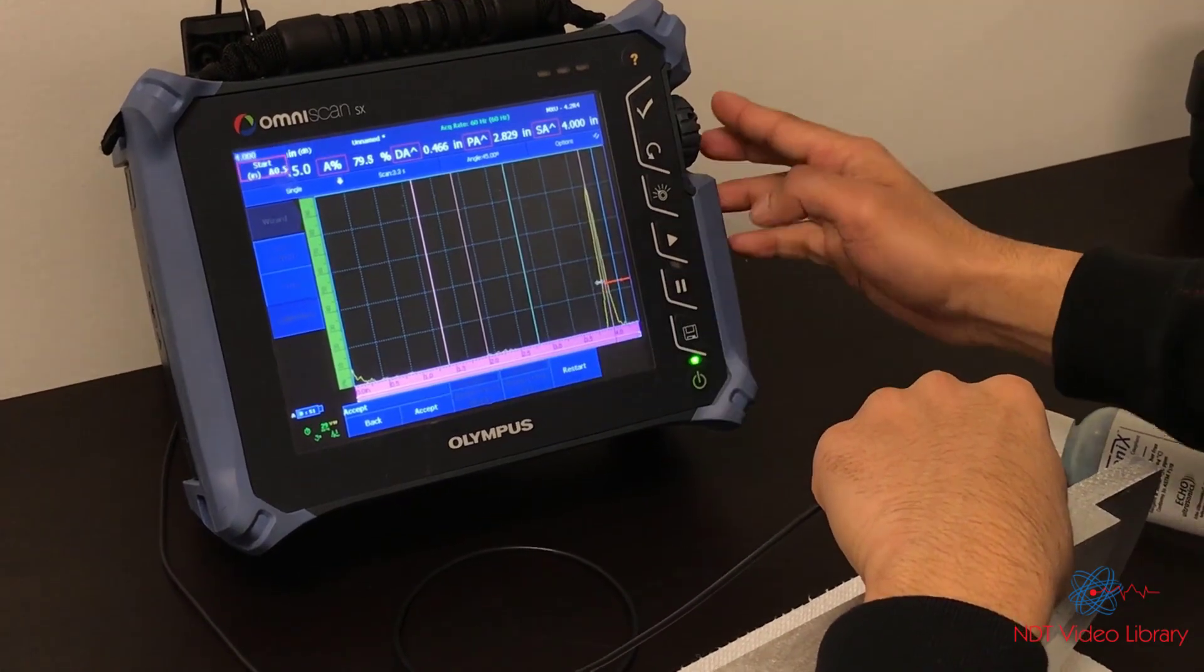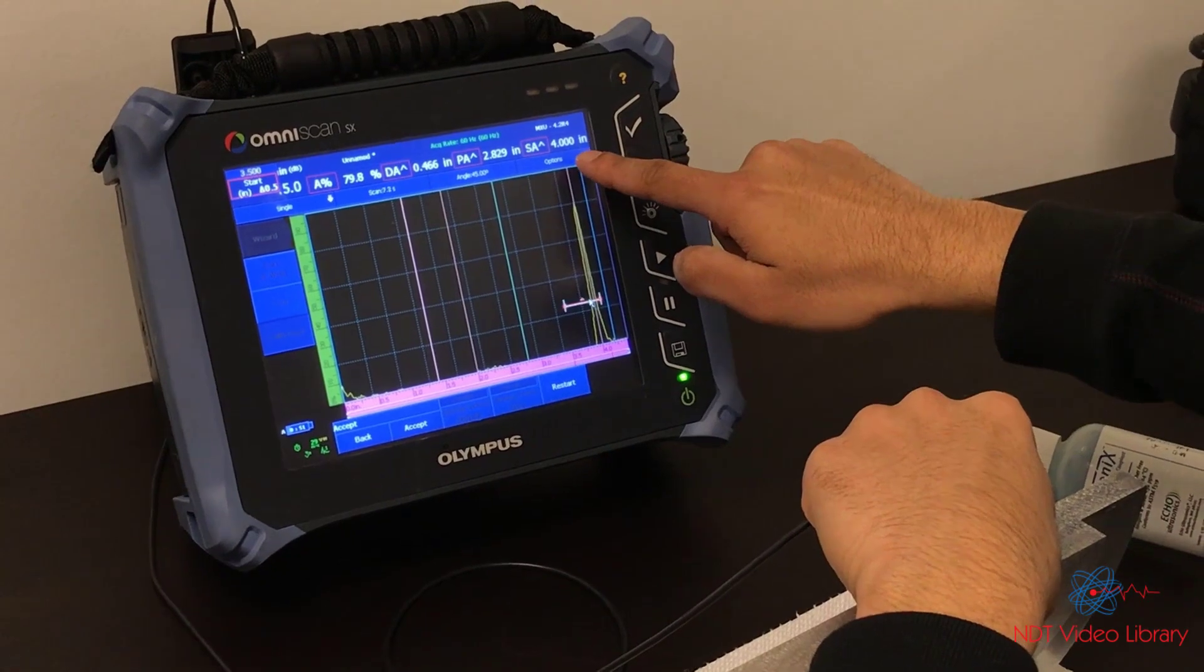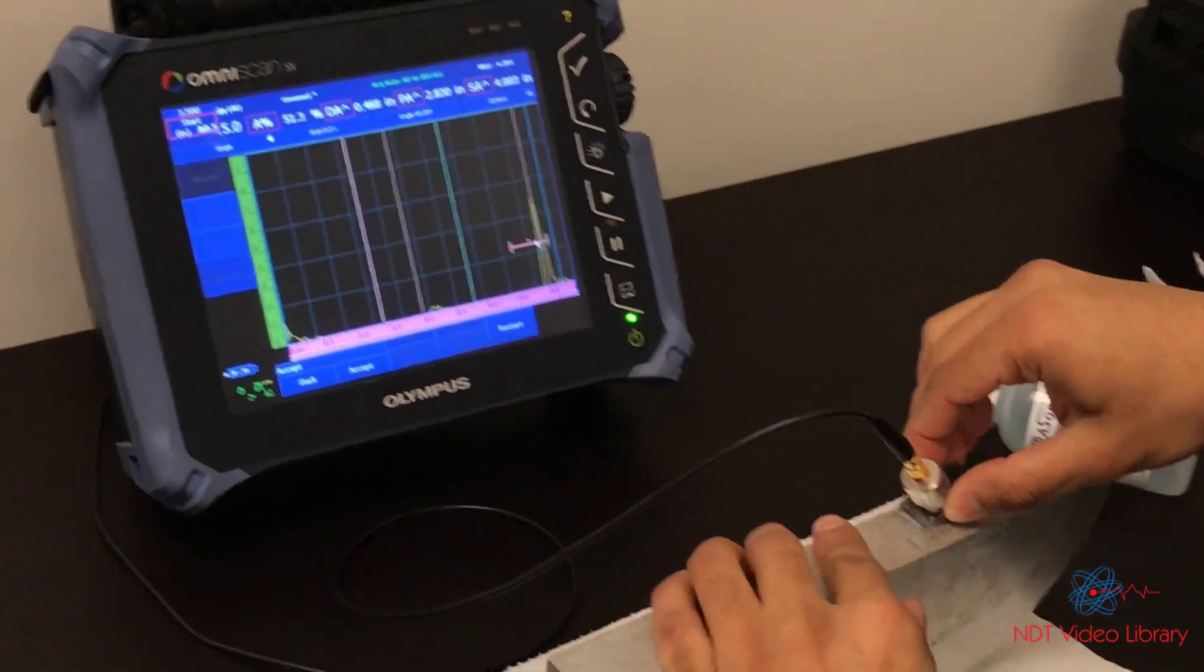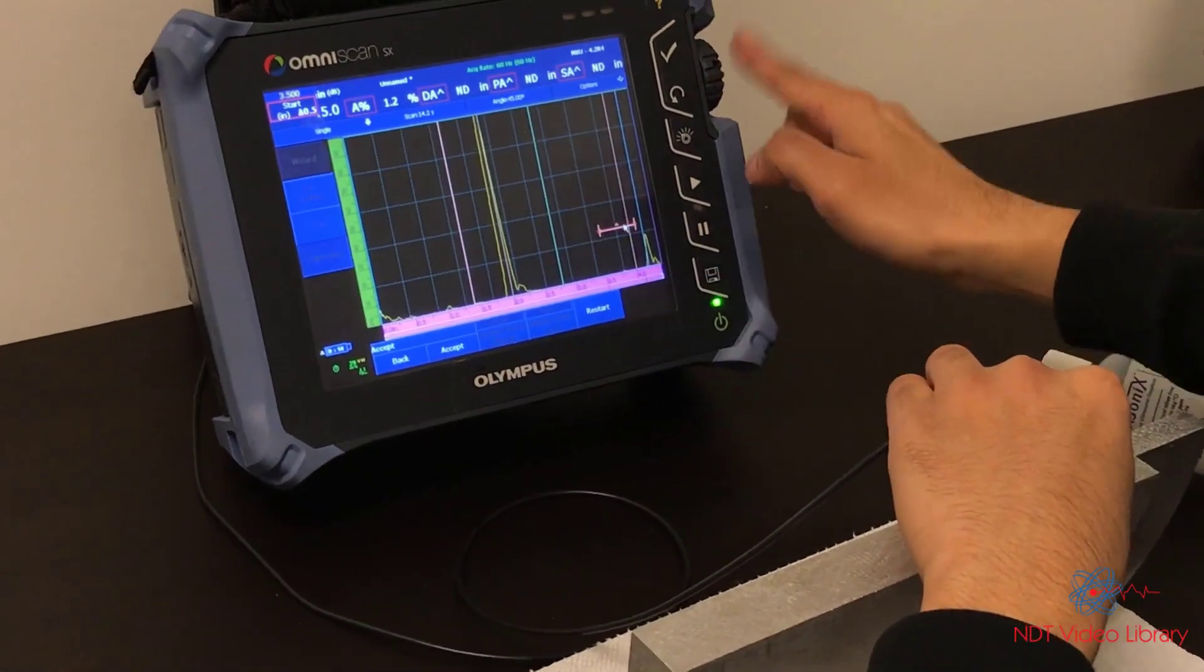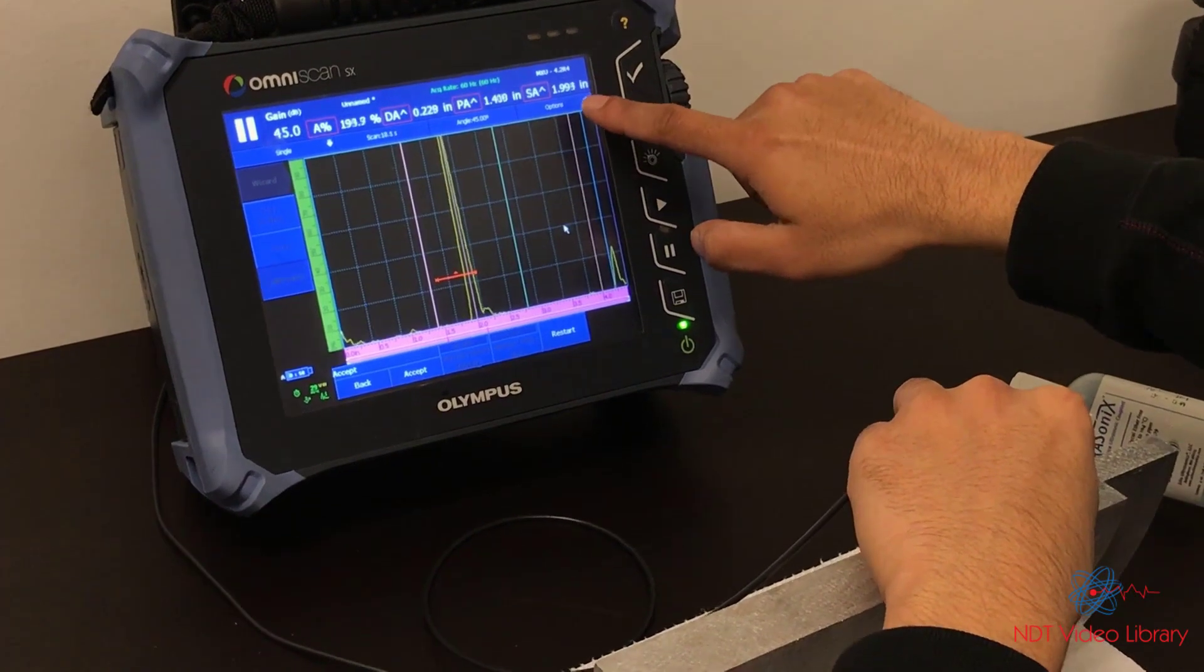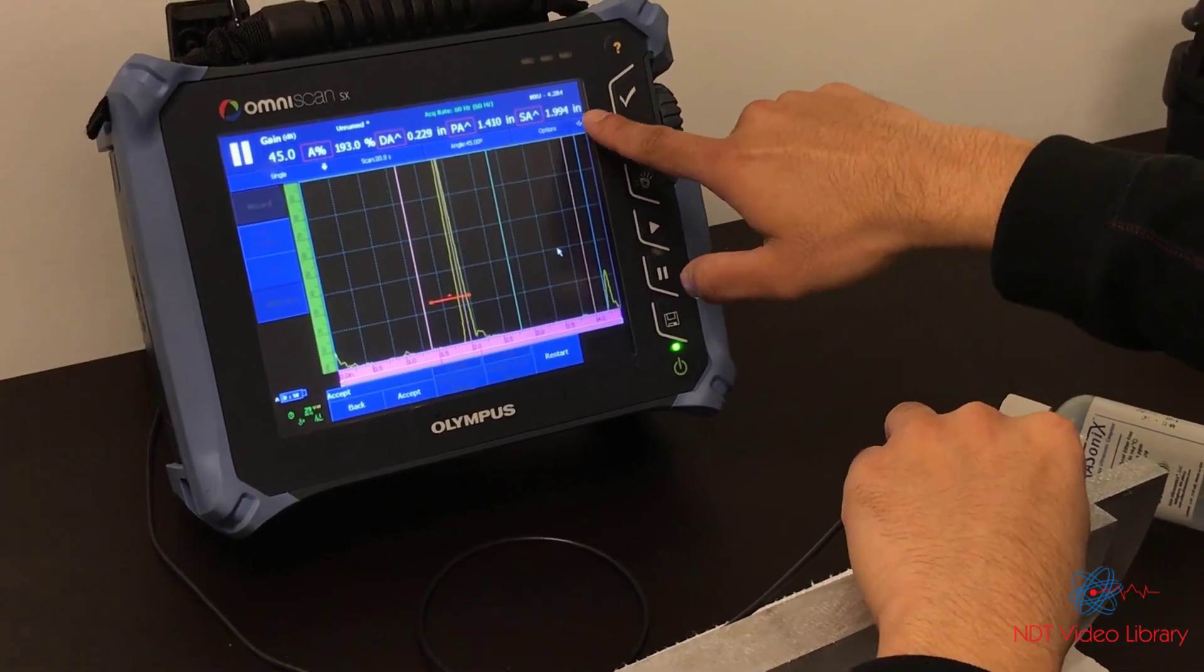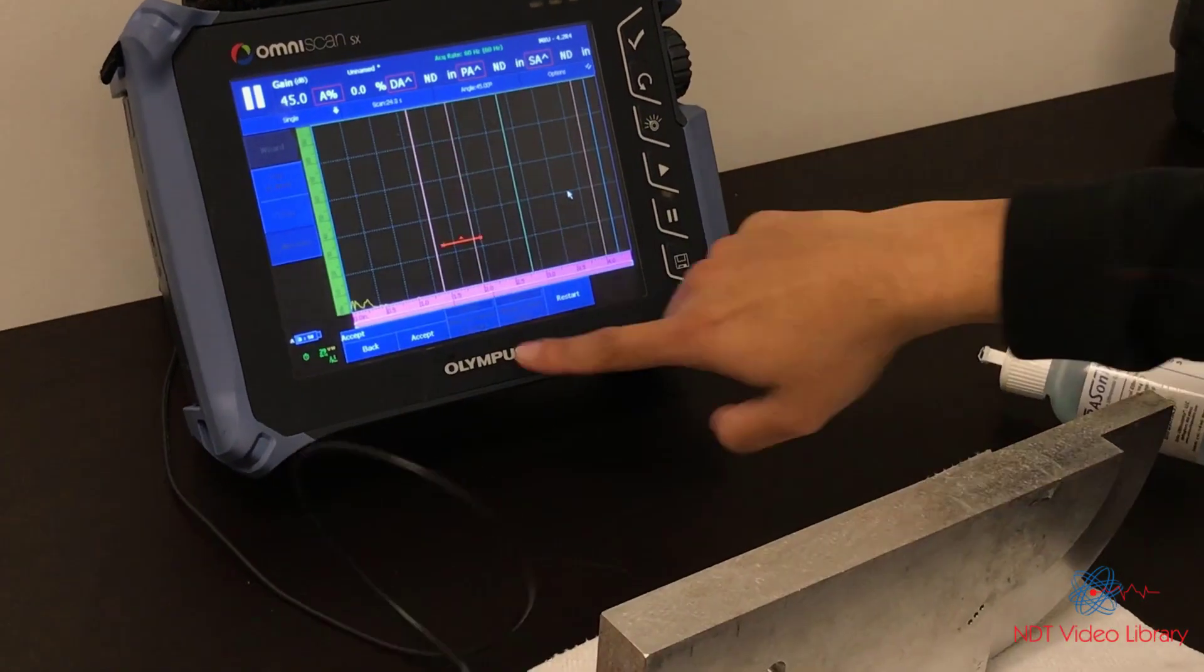Now you can verify if you want. The beam path here says 4. And if I want to check the other one, which was the 2 inch one, I'm going to move the gate over there. The beam path says almost 1.99, which is 2. So that means we calibrated it. And then we hit accept. That's it.